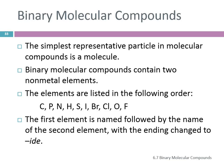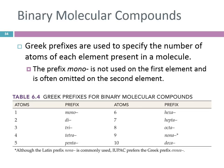When we write the formulas for these, the first element is named just as a plain element name. The name of the second element is named like it was an ion — it changes its ending to "-ide." It's not an ion, but it still changes the ending. Because we don't have any charges to tell us how many of each element, we use Greek prefixes to indicate the numbers. Mono means one, di means two, tri means three — how many sides does a triangle have? Three.